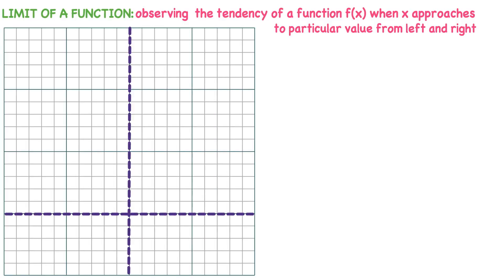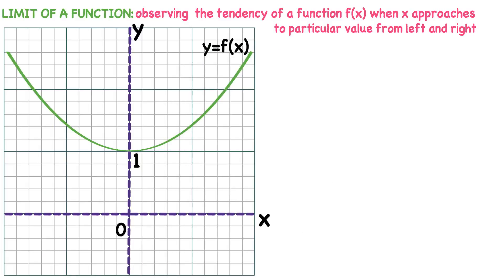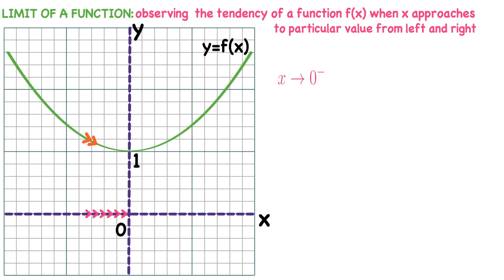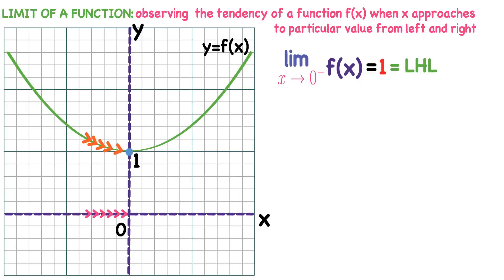I will explain this with a graph. Consider the coordinate axis — x-axis, y-axis, and the origin — and a curve y = f(x). As x approaches to 0 from left, all x values approach 0 from the left. Observe where f(x) is approaching: the graph is approaching to 1. So the limiting position of this function when x approaches to 0 from left is 1 — that is, 1 is the left hand limit of the given function.